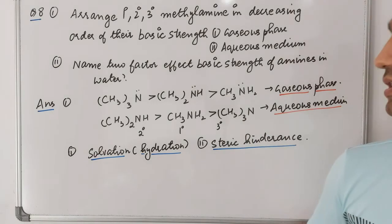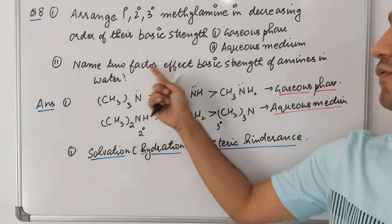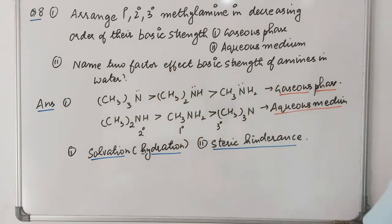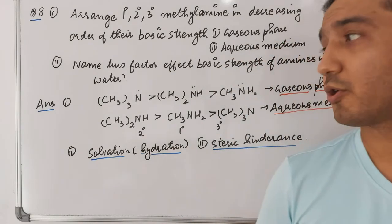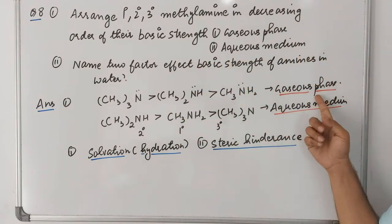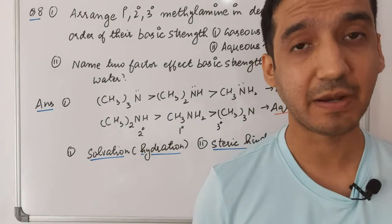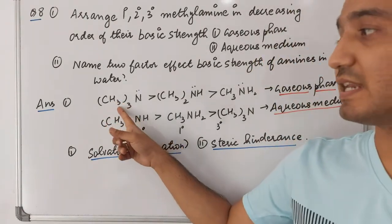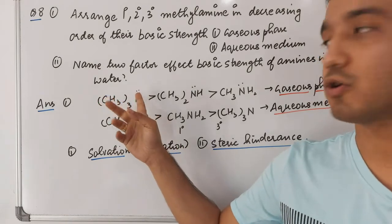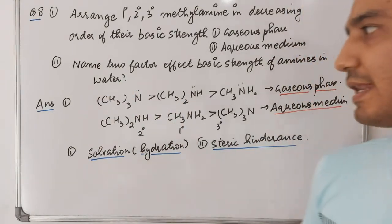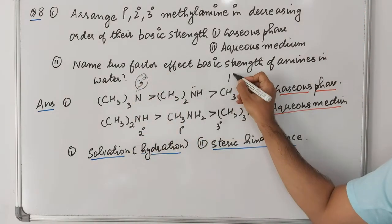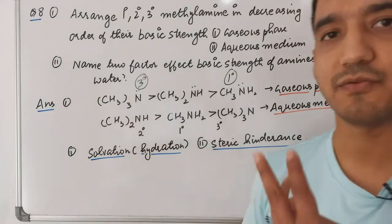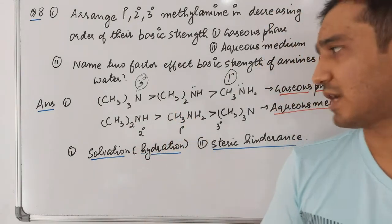Question eight: arrange primary, secondary, and tertiary methylamines in decreasing order of basic strength in gaseous phase. In the gaseous phase, only the inductive effect operates. CH₃ groups donate electrons to nitrogen, increasing electron density. Tertiary amine has the highest basic strength because it receives electrons from three CH₃ groups, secondary from two, and primary from one. So the order is: tertiary > secondary > primary.